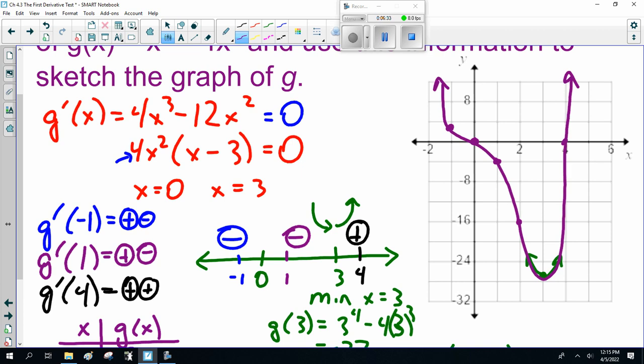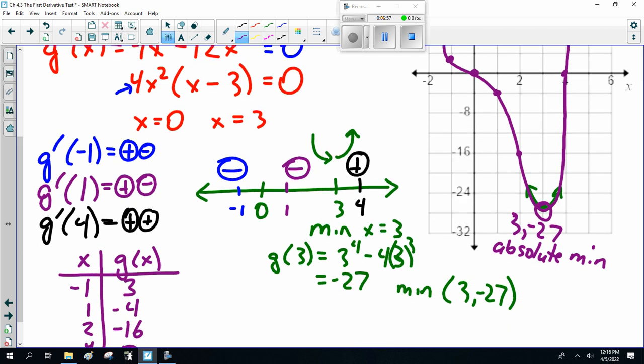So there we go. That is my function. And I'll point out here that this 3 and minus 27 is an absolute minimum. Relative means in that area it's the smallest or the biggest. But absolute means it's the biggest or the smallest. This is an x to the 4th. It will have an absolute minimum, and there it is at 3 and minus 27.